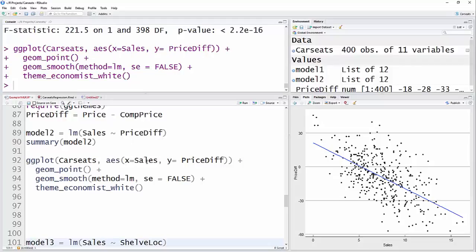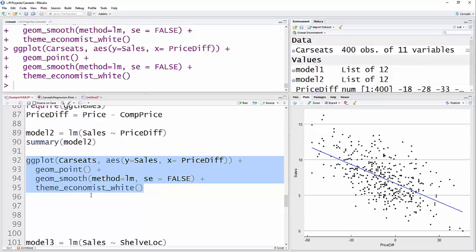Okay, that's actually not right. This should be Y is our sales, and X is the price difference. How about that? Let's run that. Okay.